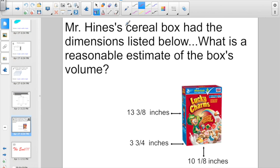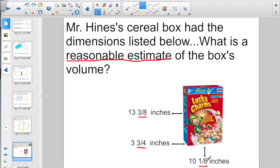So check out this one. It says, Mr. Heinz's cereal box had the dimensions listed below and they are asking us, what is a reasonable estimate of the box's volume? This is a volume problem, but we have to estimate it. We learned the other day that when you're estimating, it's all about the fraction, whether it's more than a half or less than a half. So we have a length right now of 10 and 1 eighth inches. We have a width of 3 and 3 fourths inches and we have a height of 13 and 3 eighths inches. So let's jump on right here. 1 eighth. 1 eighth is definitely less than a half because half of 8 is 4 and 1 is less than 4. So I am going to call this length 10.